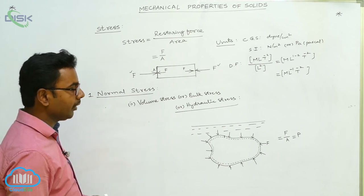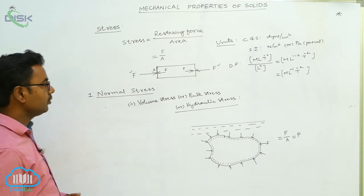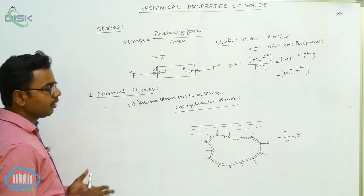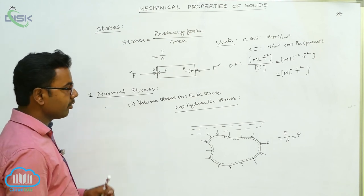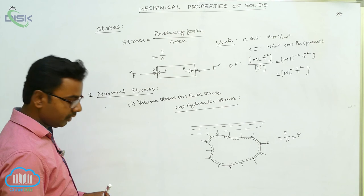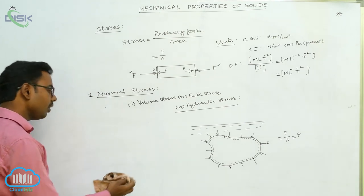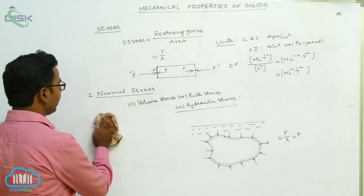Okay, so it is also normal stress. Like this we're having two types of normal stress: areal stress and volume stress. Thereafter we go for tangential or shearing stress.